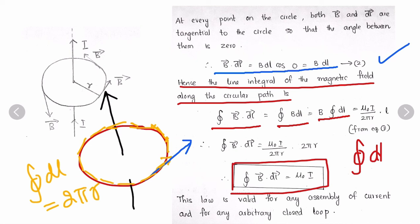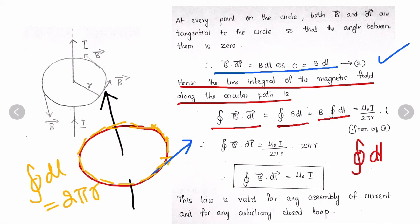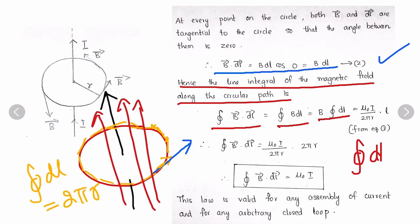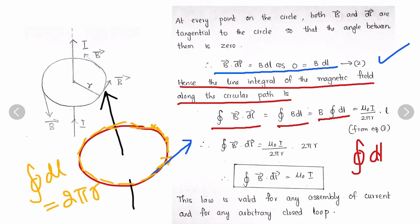This law is valid for any assembly of currents and for any arbitrary closed loop. In the figure we showed only one wire, but there can also be many wires carrying current — we can add all the currents. Finally, Ampere's circuit law is: ∮B·dL = μ₀I, where I is the total current passing through the loop.